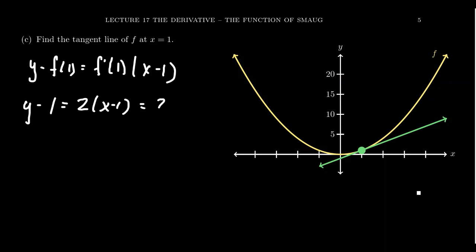Distribute the two. We get two x minus two. And then we have to add one to both sides. And therefore, the tangent line is going to look like y equals two x minus one, which then let's check with our illustration right here.